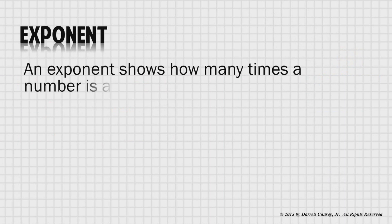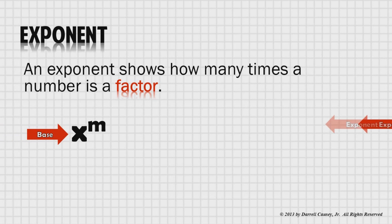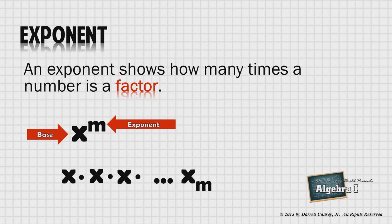First, what's an exponent? An exponent shows how many times a number is a factor. So look at our example there. We have x to the m power. And what that tells us is the base is x and the exponent is m. We also refer to exponents as powers. And notice there that we have x times x times x until we have as many factors as there is m.